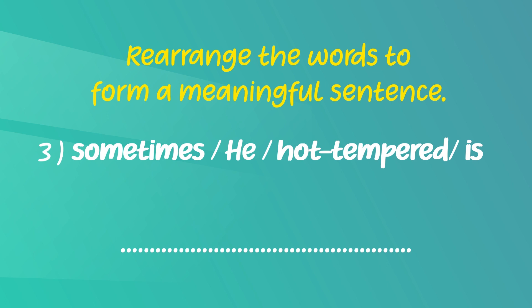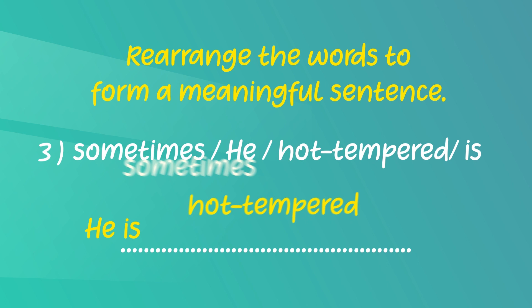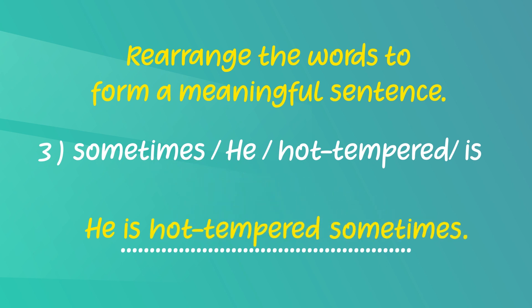Now the last one. Here you have four words: sometimes, he, hot tempered, is. So what is the sentence? He is hot tempered sometimes. Now you have written three simple sentences describing a person.